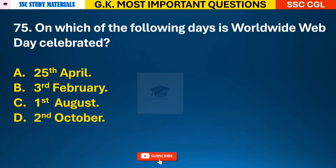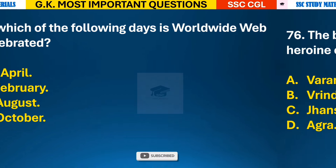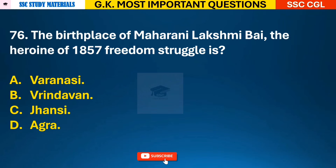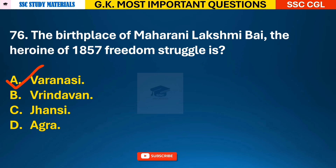Question 75: On which of the following days is Worldwide Wave Day celebrated? Answer C - it is celebrated on 1st August. Question 76: The birthplace of Maharani Lakshmi Bai, heroine of 1857 freedom struggle, is? Answer A - her birthplace was Varanasi.